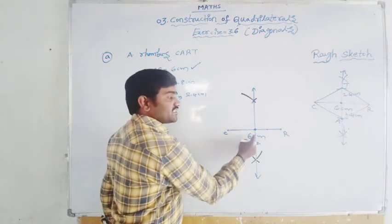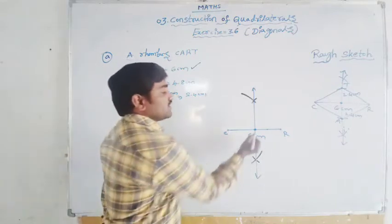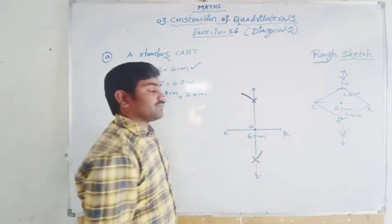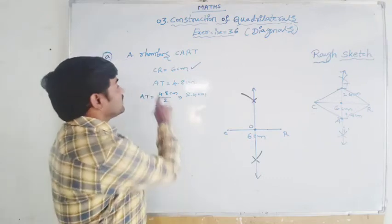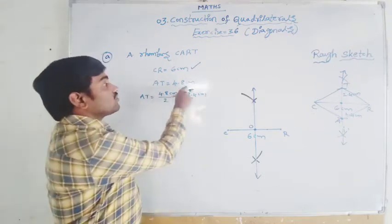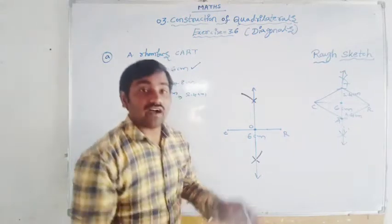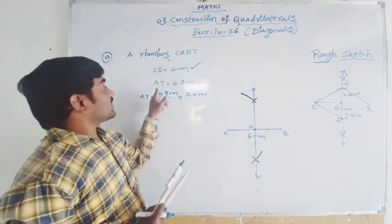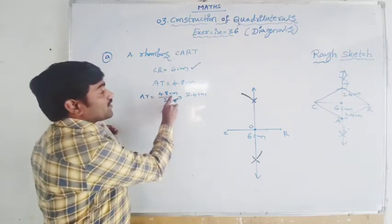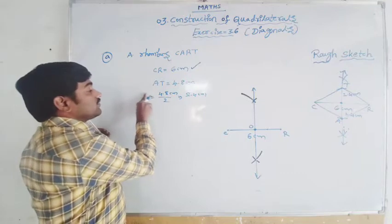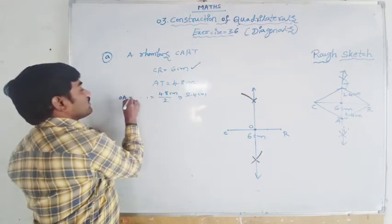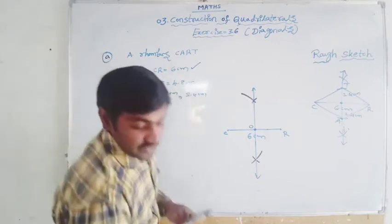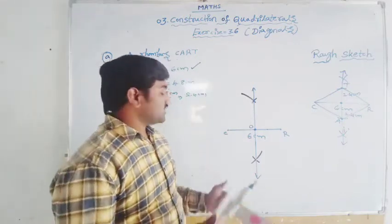From C to this intersection point will be 3 centimeters, and from this point to R will also be 3 centimeters. Suppose this intersection point is O. So CO will be 3 centimeters and OR will be 3 centimeters. Now we have to locate A and D points again. AT equal to 4.8 centimeters. You do not take 4.8 centimeters on the compass — you take half of it: upside 2.4 centimeters and downside 2.4 centimeters. So OA equals OD equals 4.8 divided by 2, that equals 2.4 centimeters. You take 2.4 centimeters as the radius.